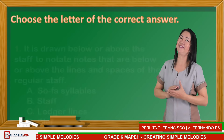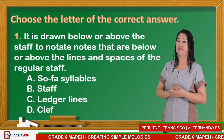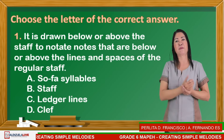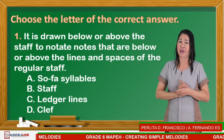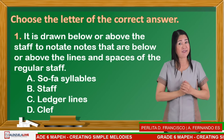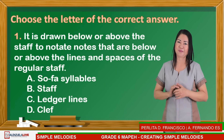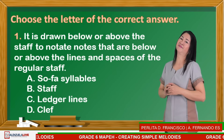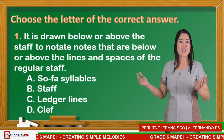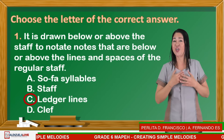Number one: It is drawn below or above the staff to notate notes that are below or above the lines and spaces of the regular staff. Is it A — solfege syllables, B — staff, or C — ledger lines? The correct answer is C — ledger lines.